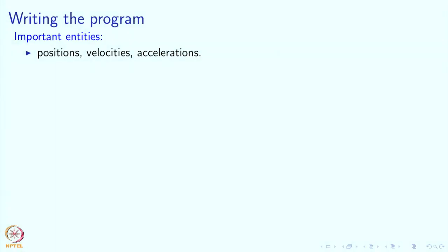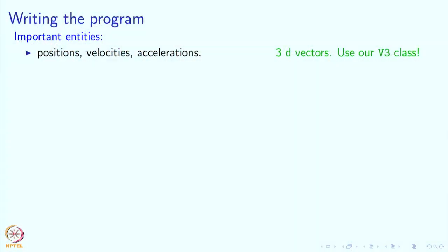As always, in order to write the program we should first try and enumerate the important entities. In this program, it is all about positions, velocities, and accelerations. These are not entirely simple quantities — they are actually 3-dimensional vectors, and since they are important entities we should use a class for them. Luckily we did develop such a class, which was our V3 class, developed some time earlier.